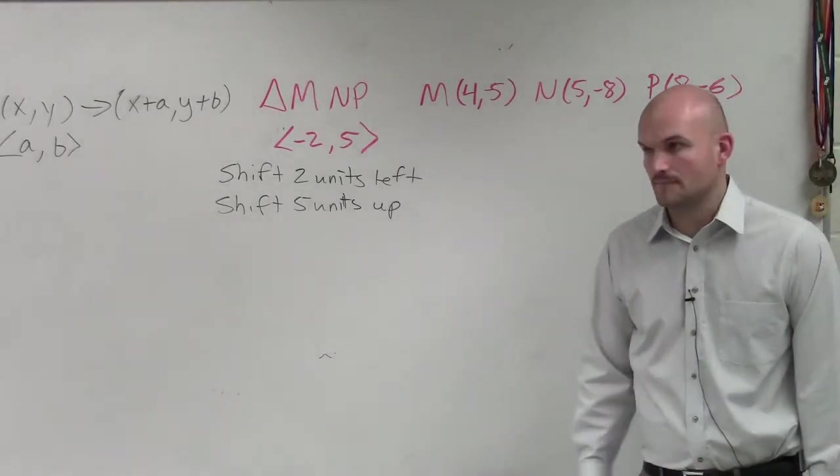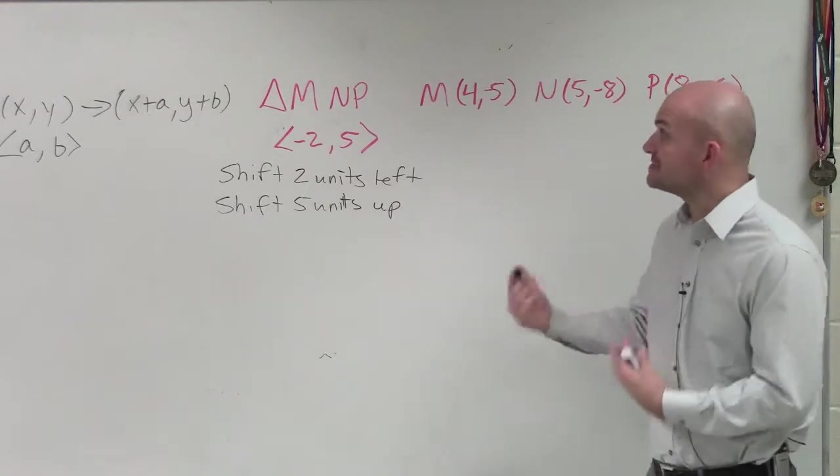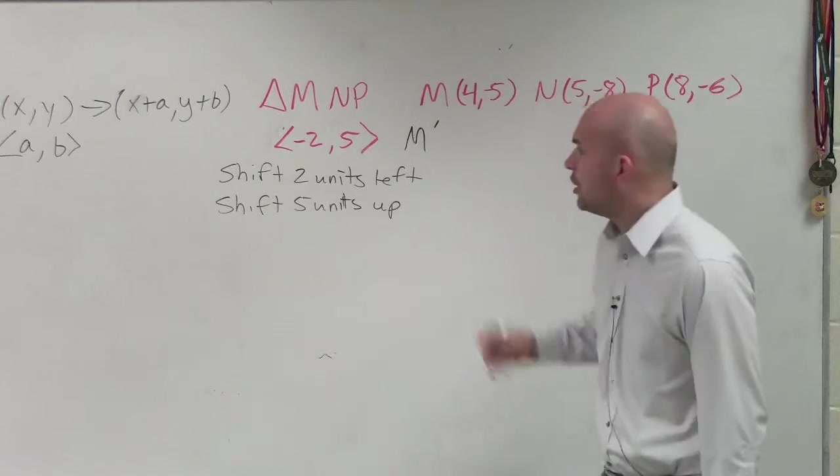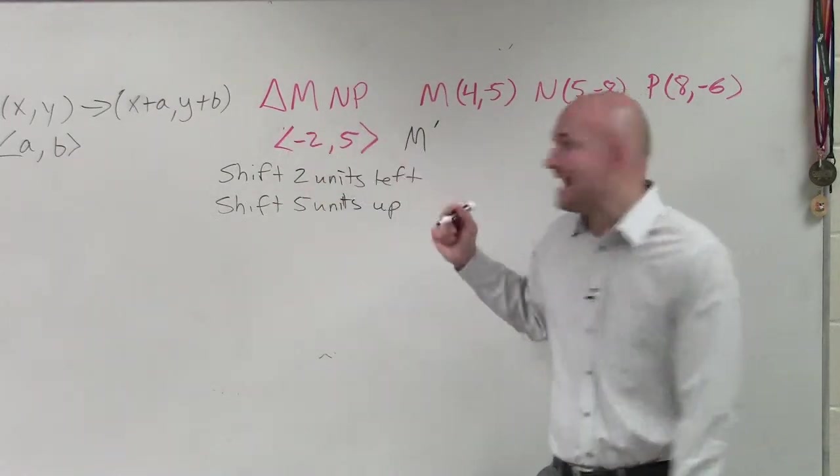Does everybody see that? You just add the a and the b. So that's exactly what I'm going to do in this case. I want to go ahead and determine what is M prime. So all I'm going to do is I'm going to take my transformation vector and add them.